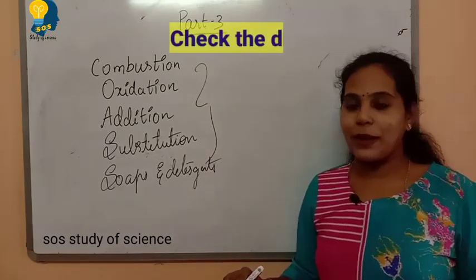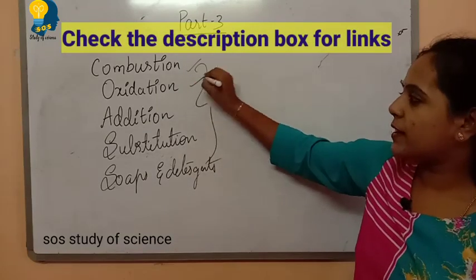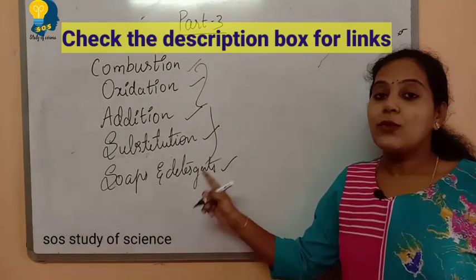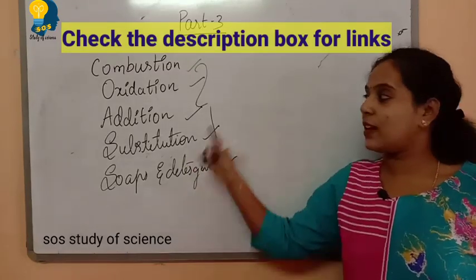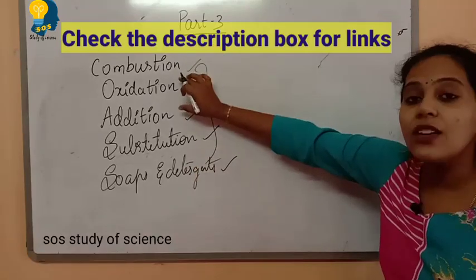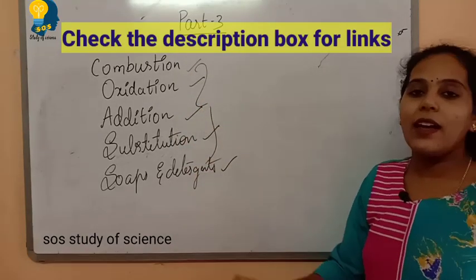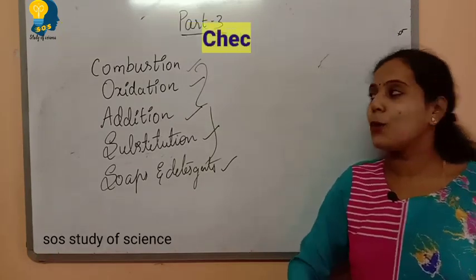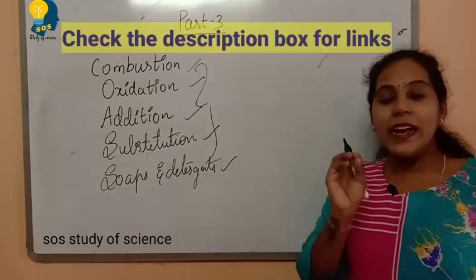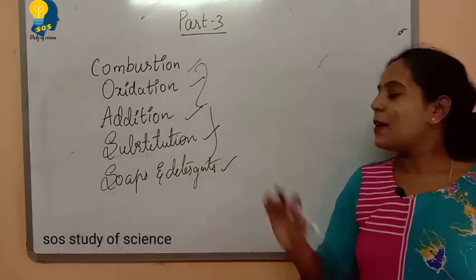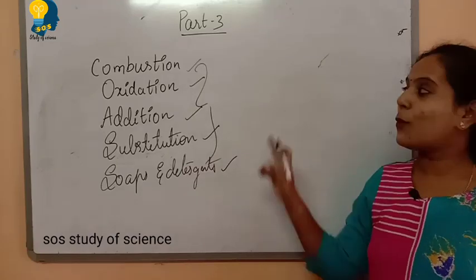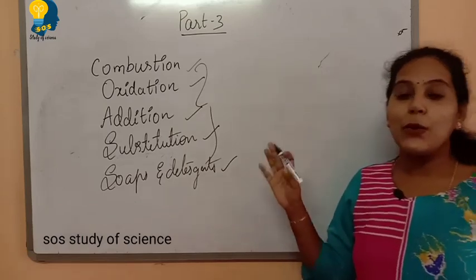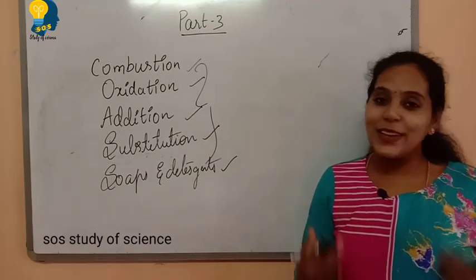For a detailed explanation of combustion, oxidation, addition, substitution, and soaps and detergents, I have animated videos with images — links are posted in the description with detailed explanation of each concept. If you haven't learned this concept at all, please go through those links. Each video is only 5 to 6 minutes. First understand the concept, then come back to this revision. You can watch this video multiple times to understand much better and easier.